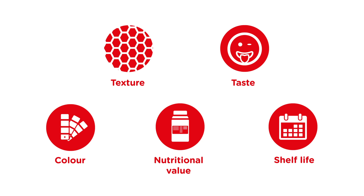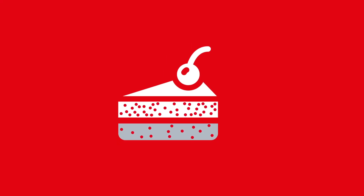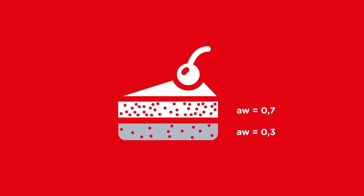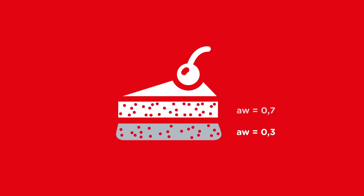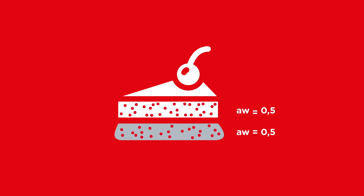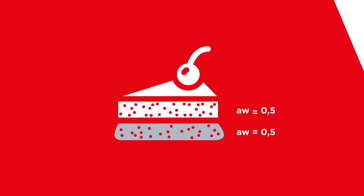Free water always moves from areas in a product with a high AW value to those with a lower AW value. This property results in undesirable changes such as a soggy biscuit base in a cheesecake.